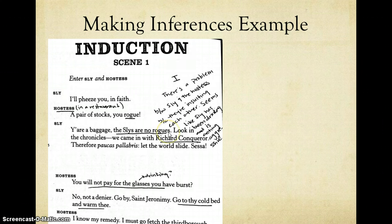But as I read, I made an inference right off the bat, right off the first page. And I'm inferring that there's a problem between Sly, this character Sly, and the hostess because they're insulting each other. Calling each other a rogue. Sly saying he's not a rogue. He actually comes from Richard the Conqueror. Talking about how Sly apparently broke some glasses and the hostess wants Sly to pay for them, but Sly is not having any of that. So it seems like Sly has been drinking and is acting aggressively.